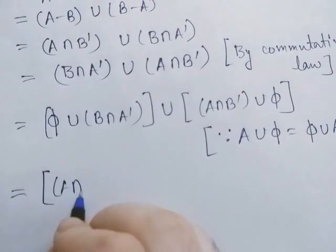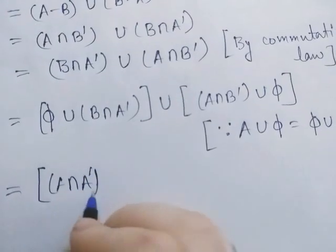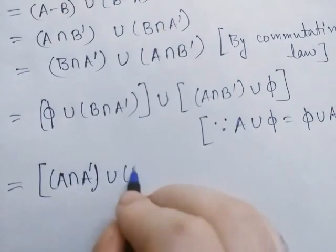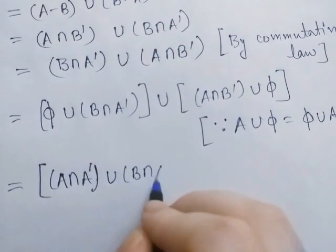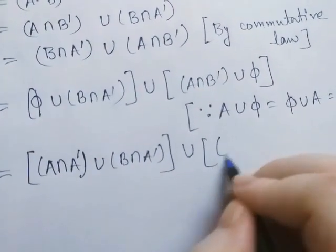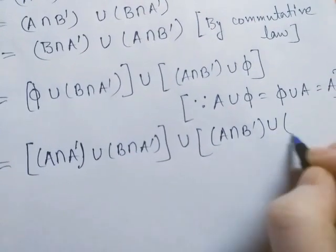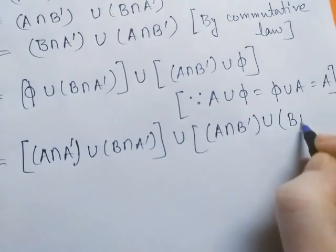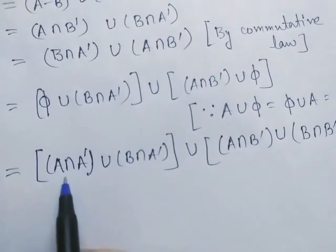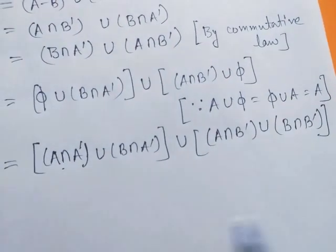We insert the terms (A ∩ A') and (B ∩ B') into the expression. We write this as (A ∩ A') ∪ (B ∩ A') ∪ (A ∩ B') ∪ (B ∩ B'), since we know A ∩ A' = φ and B ∩ B' = φ.